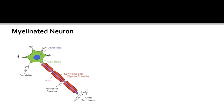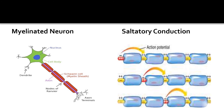This is a picture of a myelinated neuron. As you can see, there are interruptions in the myelin sheath called nodes of Ranvier. In saltatory conduction, the action potential jumps from one node of Ranvier to the next.